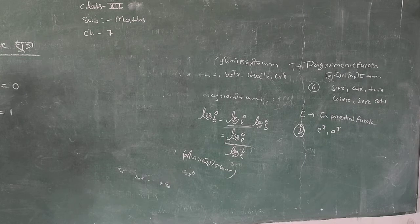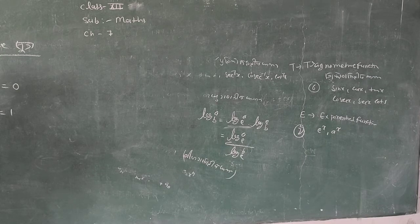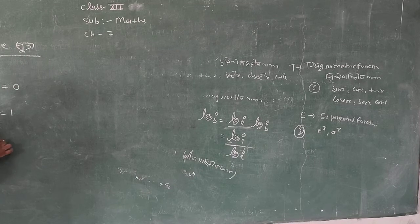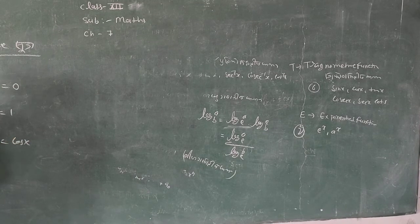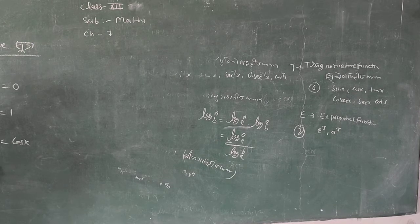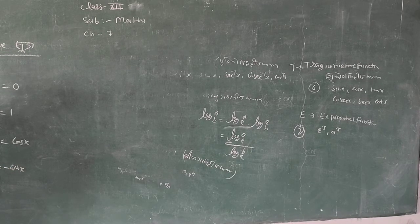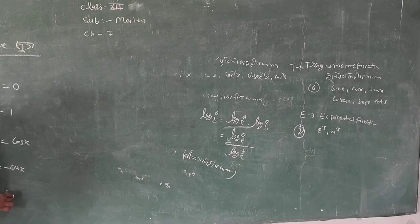Formula 3 onwards, let us take trigonometric functions. Formula 3: differentiation of sin x. Formula 4: Differentiation of cos x = minus sin x.